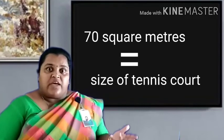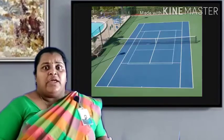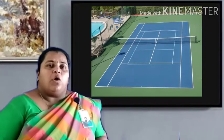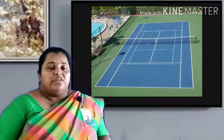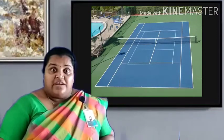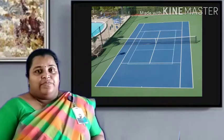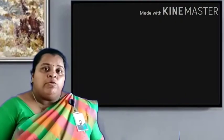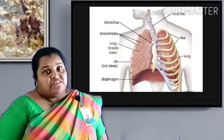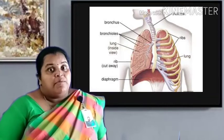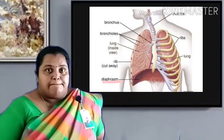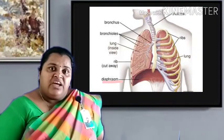Imagine the size of your lungs — if all the alveoli expand fully, the size of the lungs will be almost above the size of a tennis court. Interesting, isn't it? Just below the lungs, there is a muscular wall which separates the thoracic and abdominal cavity, and that is known as the diaphragm.